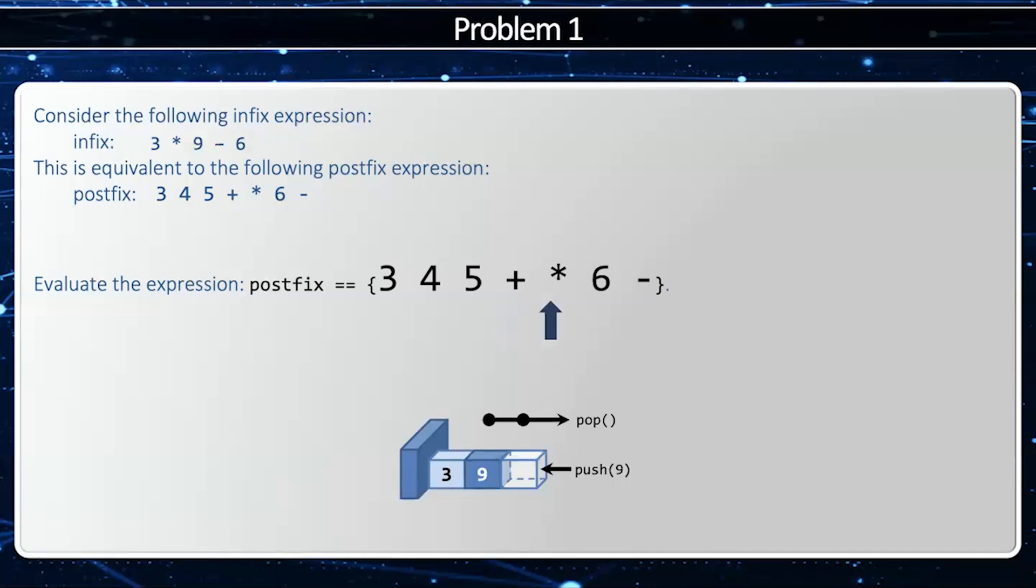Now I'm going to do the multiply. So once again, the multiply is an operator. So I take the last two items off the stack, which will correspond to the three and the nine. Notice how the three and nine are red on my infix notation. I'm going to evaluate them and put the results on the stack. And that's the same as 3 * 9, which becomes 27 - 6.